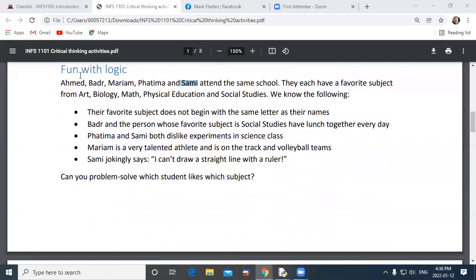With the fun with logic, the tricky bits there was nobody could have the same favorite as their first name. So Opman couldn't be favored in art, Bader couldn't be favored in biology, Mariam couldn't be favored in math, and Fatma couldn't be favored in PE, and Sammy couldn't be favored in social studies. Bader also couldn't be favored in social studies because he had to sit with that person. Fatma and Sammy couldn't be favored in biology, and Mariam must be favored in PE. The other thing we noticed is that Sammy couldn't draw a straight line with a ruler, so that rules him out from math but doesn't rule him out from art. When we went through all of those, what we found by process of elimination is Sammy had to be art.